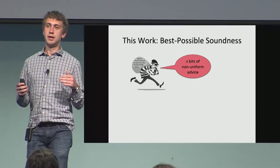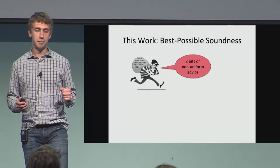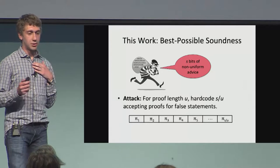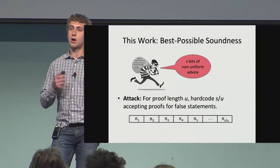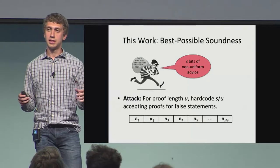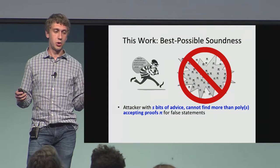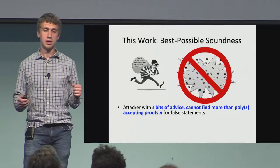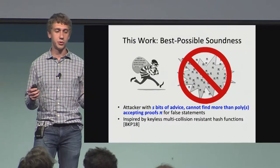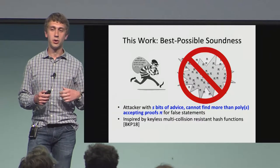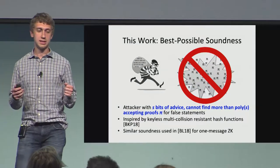In this work, we ask: in the setting where we want succinct non-interactive arguments without any setup, what's the best possible soundness we could hope for against non-uniform attackers? There's a trivial attack: if your proof length is size U, you can hard-code S/U different accepting proofs for false statements directly into your advice. So we want to say that no adversary can do better — an attacker with S bits of advice can't find more than a polynomial-in-S number of accepting proofs for false statements. This is similar to a recent notion of keyless multi-collision resistance, and a similar soundness notion was used by Batonsky and Lin in 2018 for one-message zero knowledge.